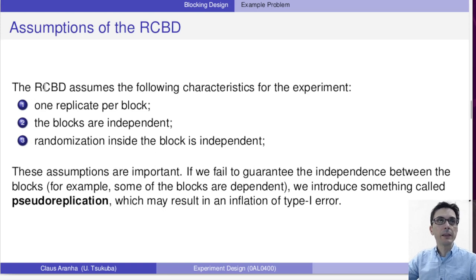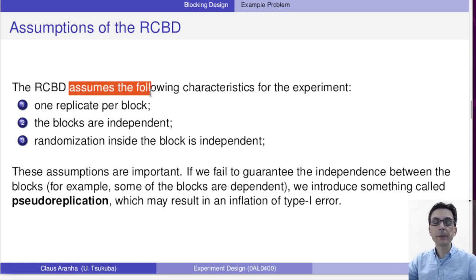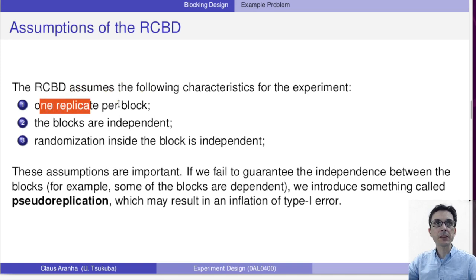Now the RCBD assumes some characteristics about the experiments that we have to make sure exist before we apply this technique. First is one replicate per block, which means that for each algorithm, we're going to have one data point for that algorithm in that block. This data point can be aggregated, that's what we're going to talk about in the next slide.